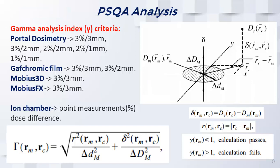We compared the clinical dose distributions with the measured distributions using the gamma analysis method, which is a common analysis approach. Essentially, for each point of the measured dose, it compares it to the calculated dose at that point. It uses two criteria: a percent dose difference between each point and a distance-to-agreement to see how close the points are. It evaluates whether each point passes, then gives you a percentage of all points that pass.